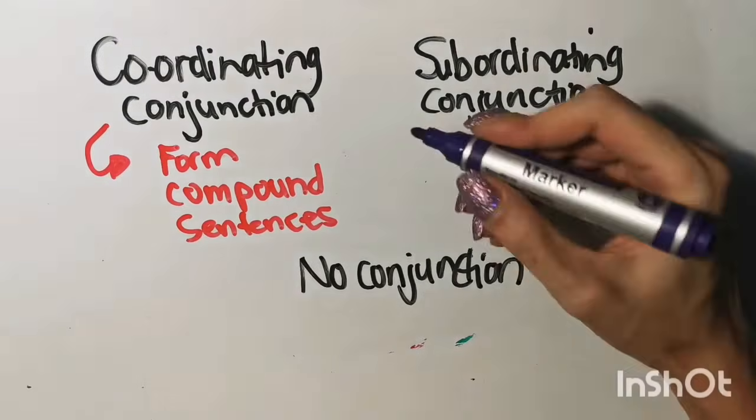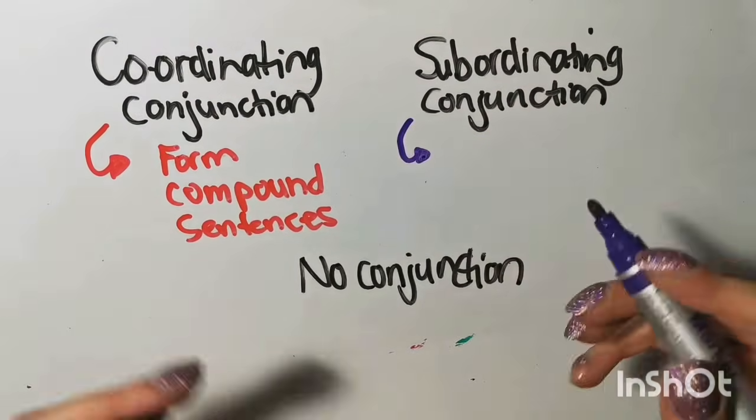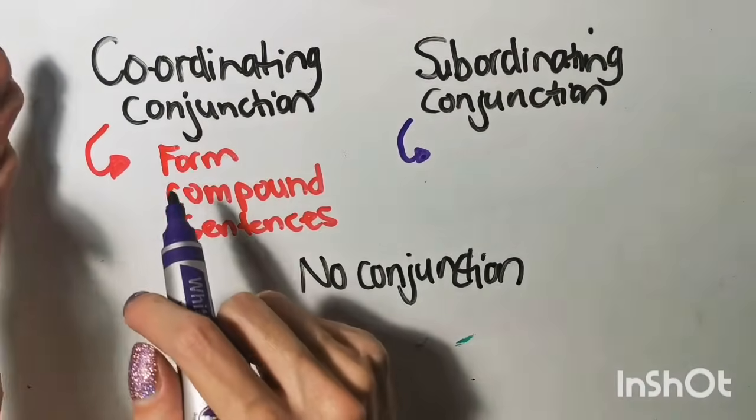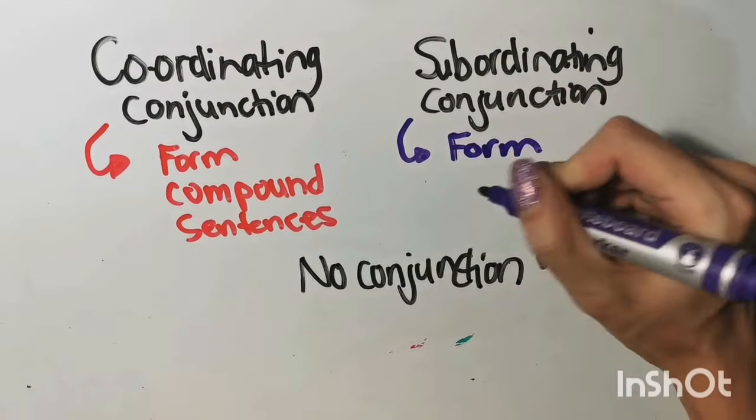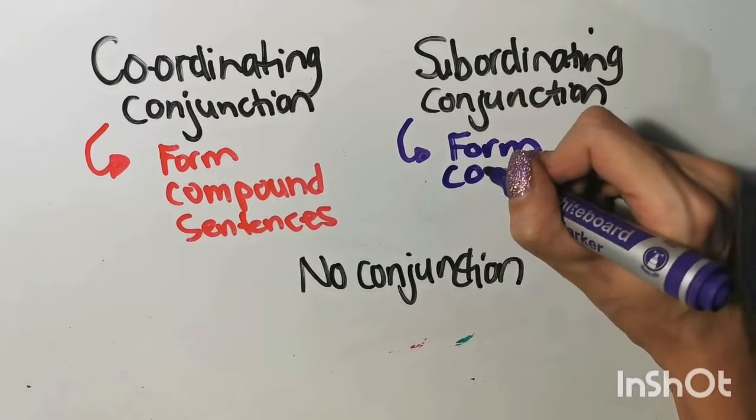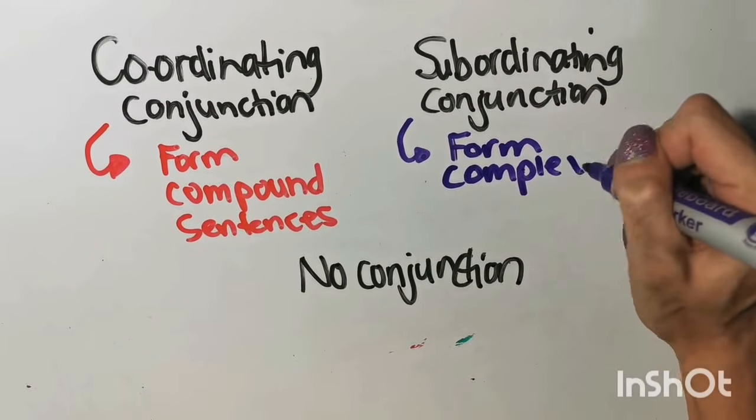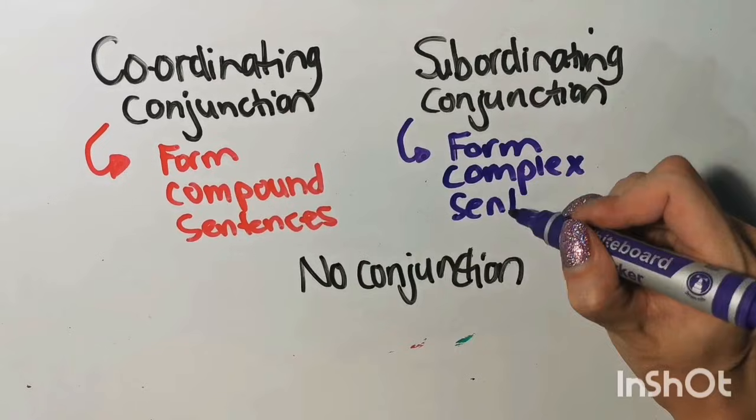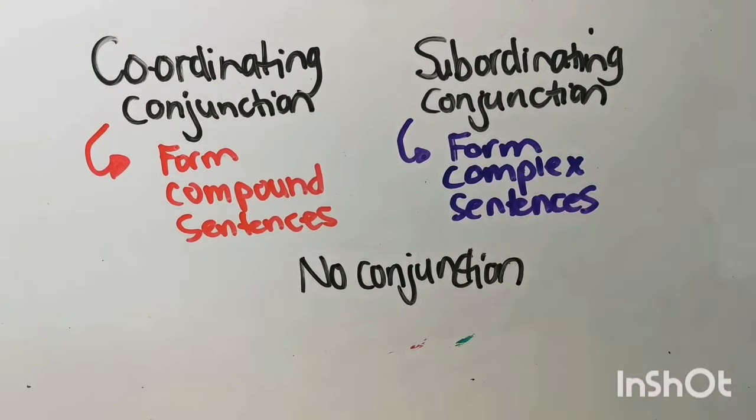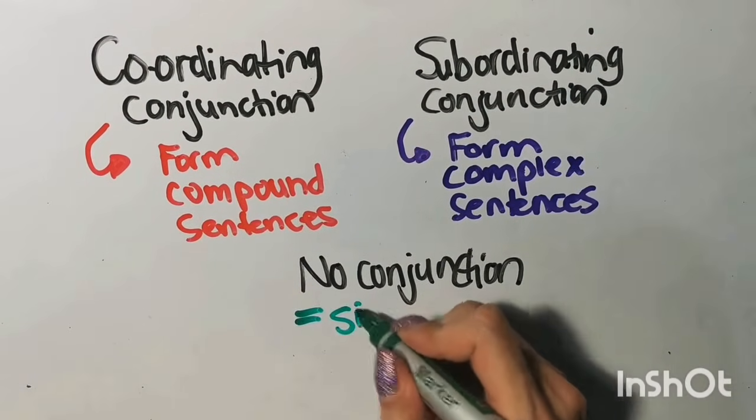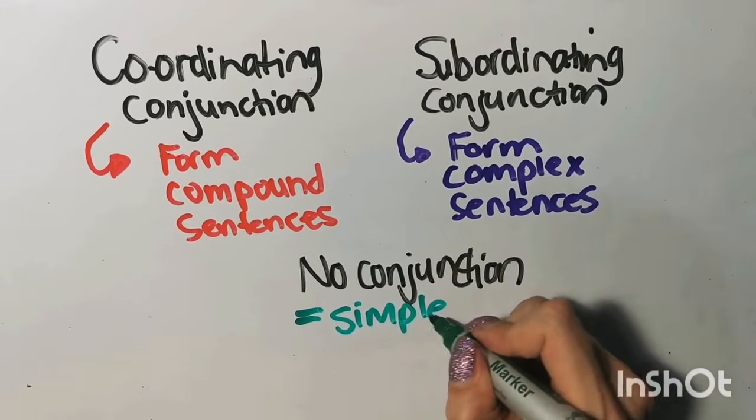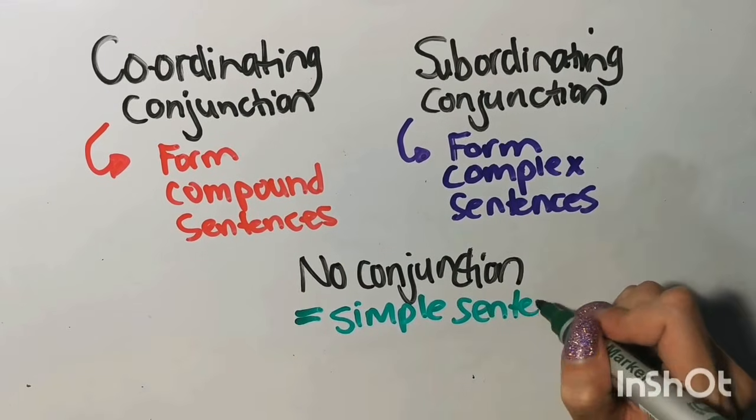Subordinating conjunctions in a sentence. And listen, there can be one coordinating conjunction or many. One subordinating conjunction or many. But if there are subordinating conjunctions in the sentence, it means that that sentence is a complex sentence. Subordinating conjunctions form complex sentences. And no conjunction in the sentence means that it is a simple sentence.